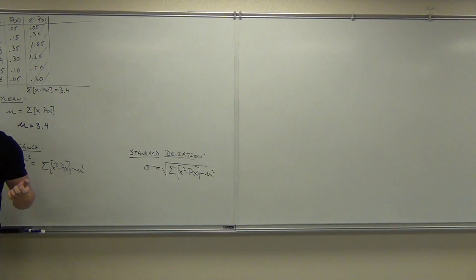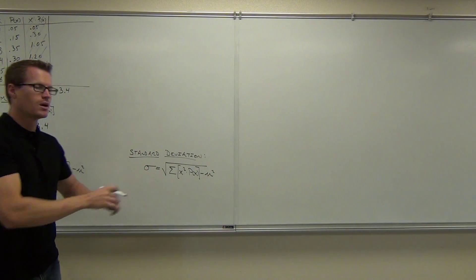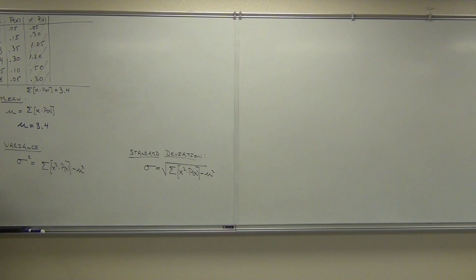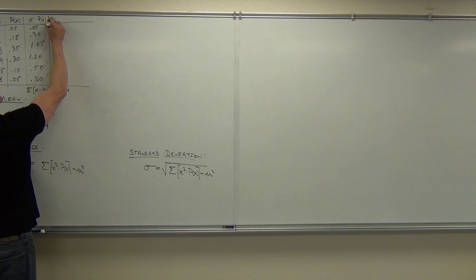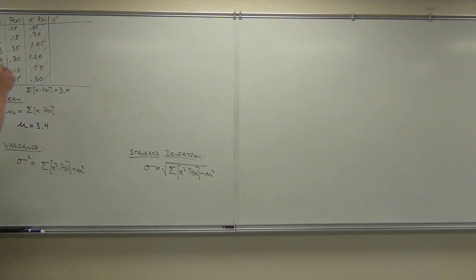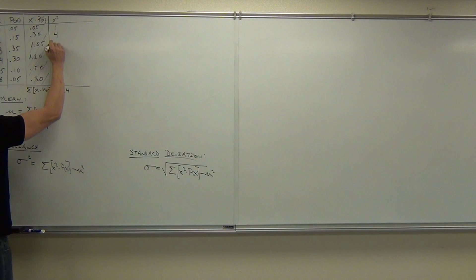In order to calculate the variance and therefore the standard deviation, which is just the square root of the variance, what we need to do is accomplish this formula. It said we find x squared first. So we're going to take all of our x's and we're going to square them. We'll make up a new column. So with our x squared, we did this last time, we're going to get 1, 4, 9, 16, 25, 36.